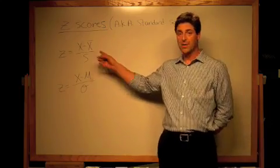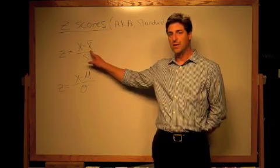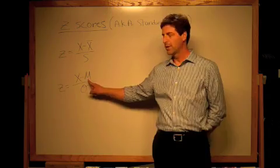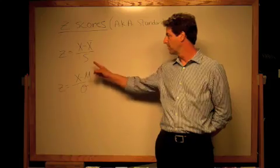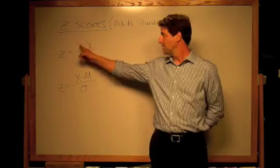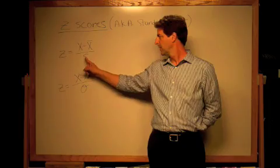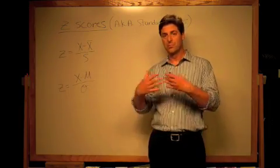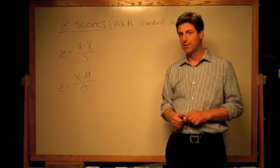And you can see they're pretty much the same. On the top you've got the difference between the individual score and the mean. And on the bottom you've got the standard deviation for the sample and for the population. So what you get is a difference between an individual score and the mean divided by the standard deviation, so converted into standard deviation units. So let's take a look and see how this works.